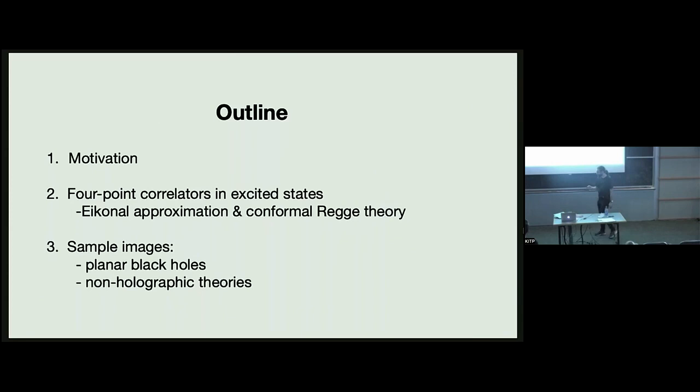Here's the outline: I'll give some general motivation, then describe exactly what kind of four-point correlators we look at — which have some non-familiar operator orderings — and discuss how we actually compute them. Then I'll show some images of what they look like in some actual states.